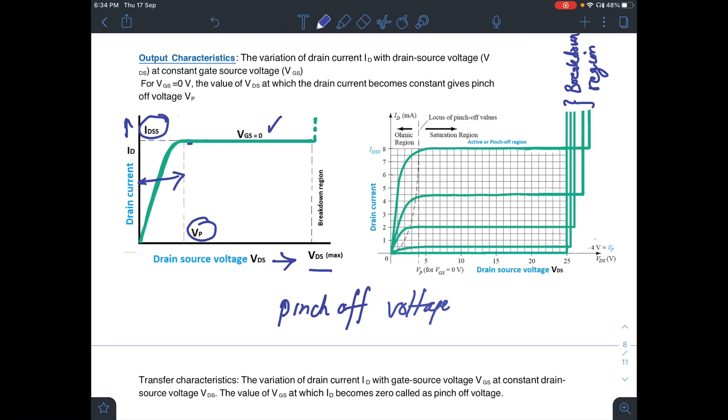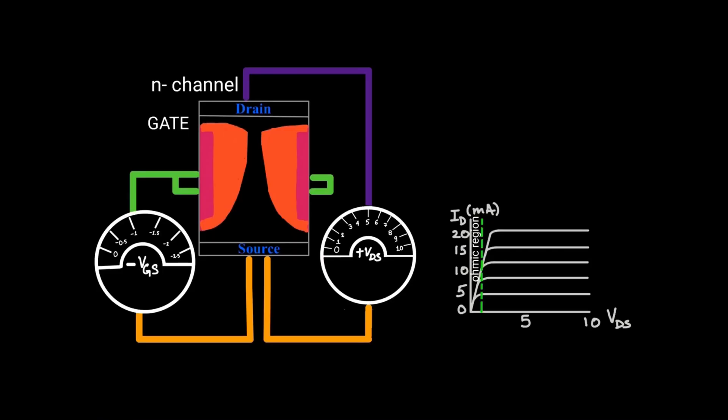After this VP, your drain current is independent of VDS. Therefore, after pinch-off voltage, this ID remains constant. Let us try to understand it again through this animation. We are going to consider the case when VGS is equal to 0 and VDS has some positive value.